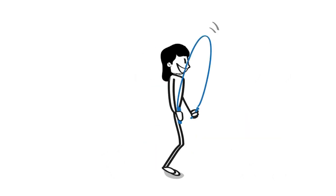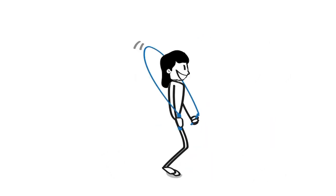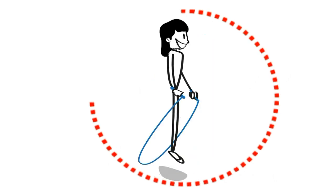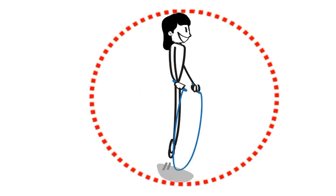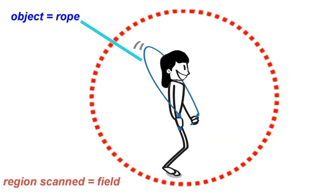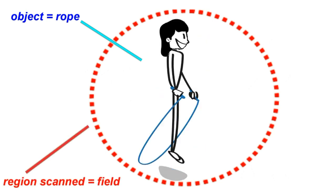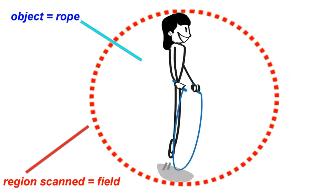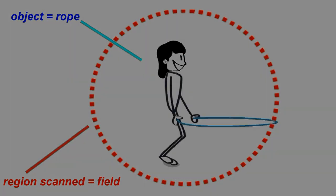Let me illustrate what a field is. You have this fellow and you jump a rope around. The field is the region; the rope is the object — not the region. The object is the rope. That's what Maxwell and Faraday were referring to. The region is just what we call the field.